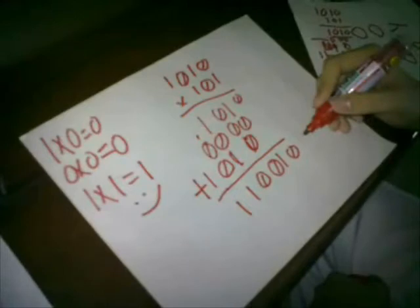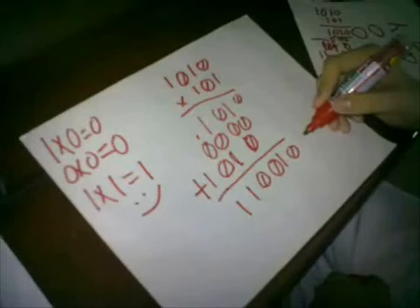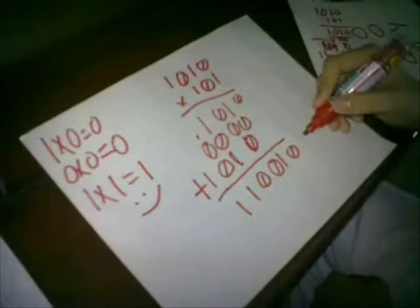Now let's add them in binary. 0 — there's nothing to add, so bring it down. 0 plus 1 equals 1. 0 plus 0, this is all 0, bring it down. 1 plus 0 equals 1, and plus 1 equals 0, carry 1. So 1 plus 0 equals 1, and 1 plus 0 is still 1, bring it down. And 1, bring it down!